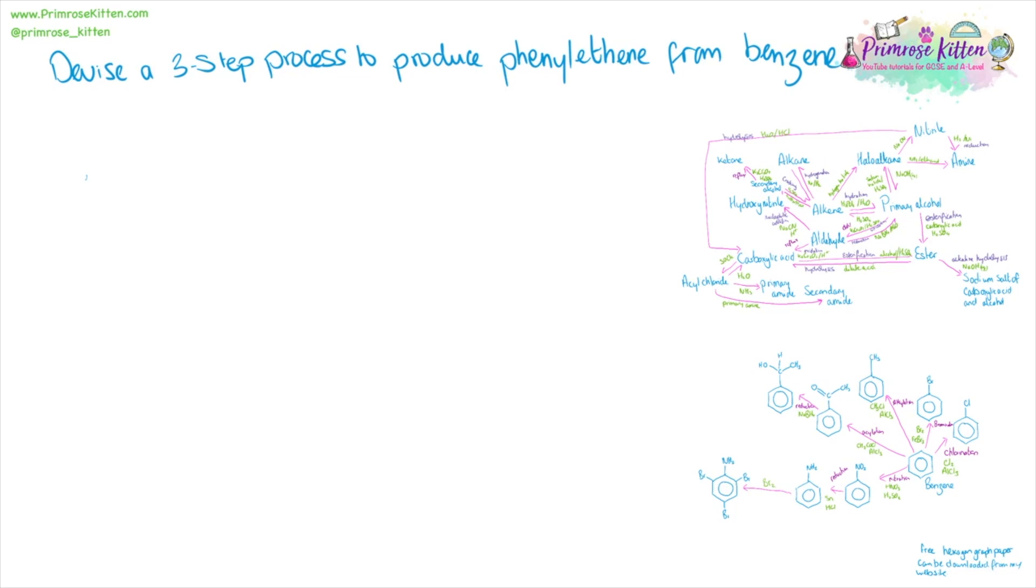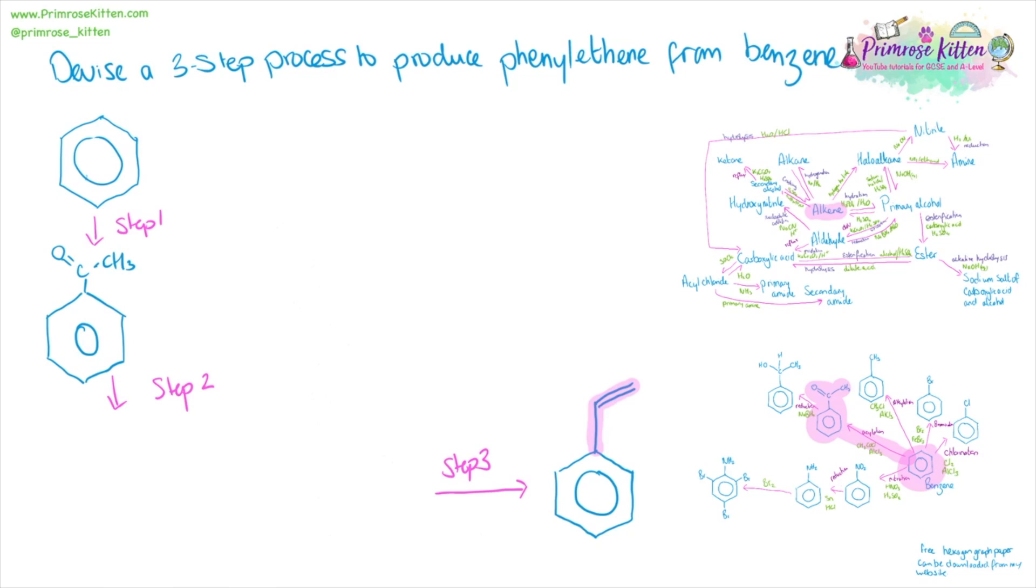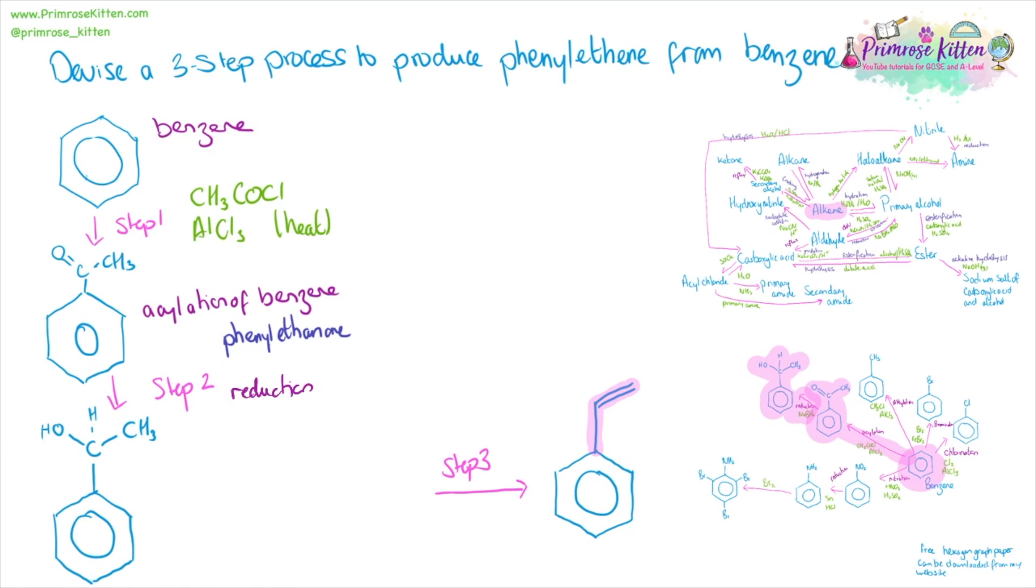Devise a three-step pathway to produce phenylethene from benzene. And you'll see for these questions, we now have both maps over on the right-hand side because we are going to be using elements from both maps. So starting off with benzene, this needs to be a three-step process. So for this, we are going to be looking at both maps, both organic synthesis pathways. Because we are going from benzene, adding on a group. And this group is just going to be an alkene. So the first step is going to be the acylation. We're then going to reduce it.